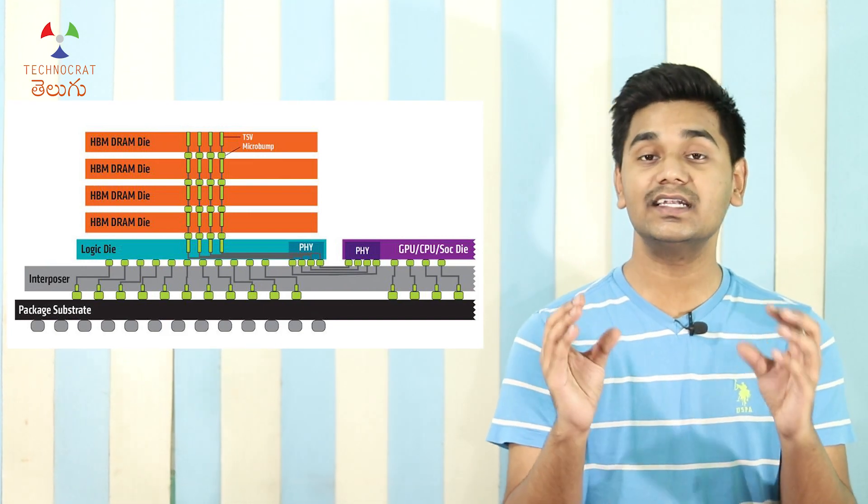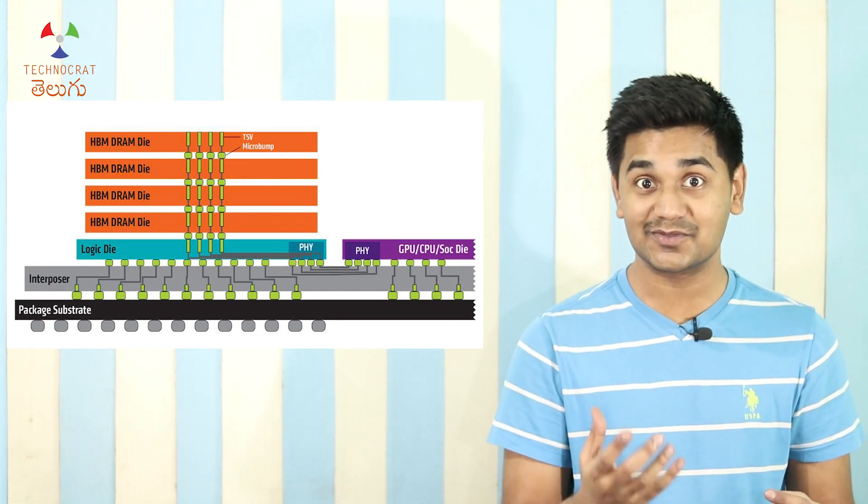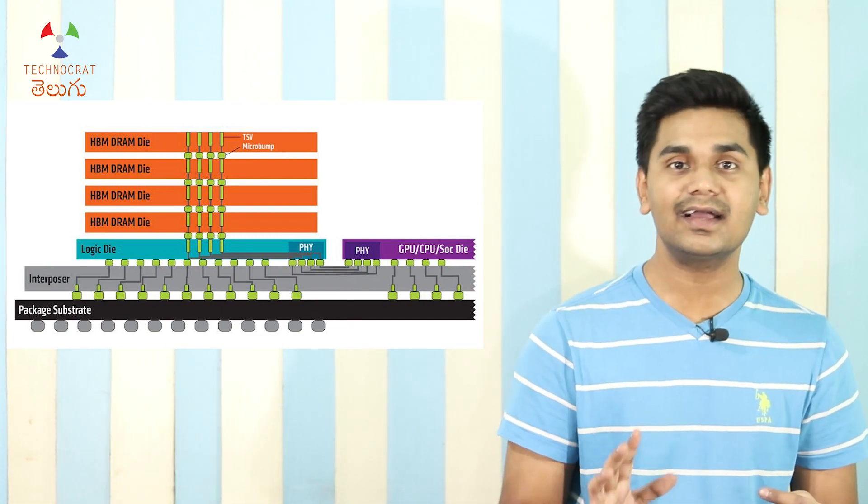HBM is important for high-resolution displays, high-resolution gaming, high frame rates, and HDR. It is also essential for 4K monitors — such as 16 displays at 4K resolution — or for VR. This is why such high bandwidth is very important.